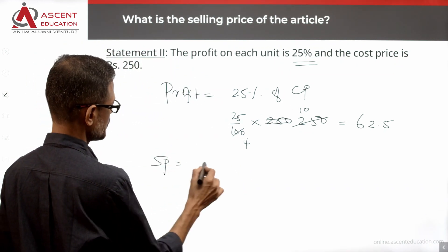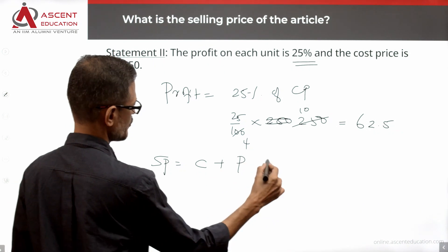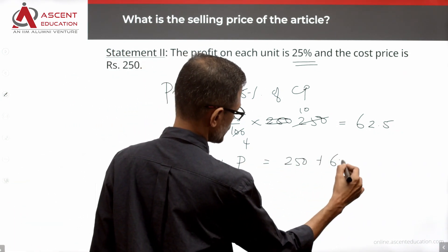So selling price is equal to cost price plus profit. Cost price is 250, profit is 62.5.